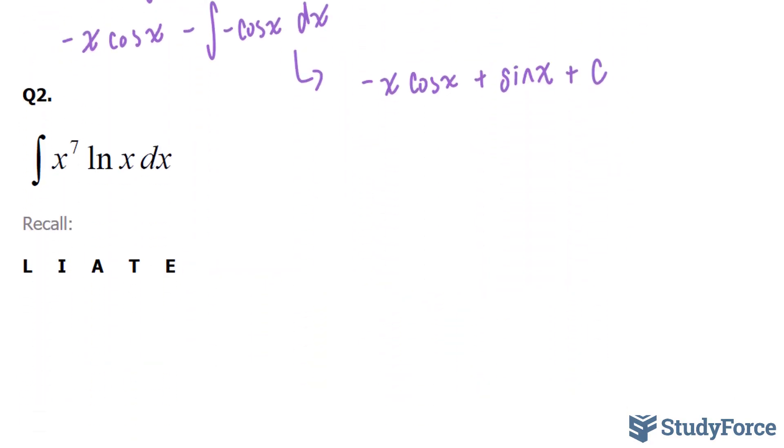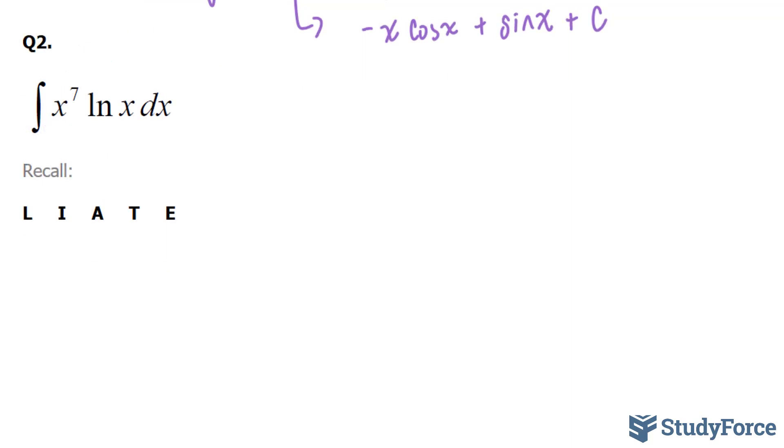Let's move on to question two. In question two, they're asking us to integrate x to the power of 7 ln x. Now which gets the u and which gets the v? This right here is a log function and this right here is an algebraic function. Logs get more priority than algebra. So your u will be ln x and your dv will be x to the power of 7 dx.